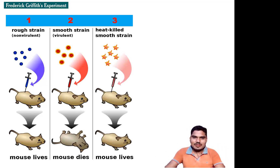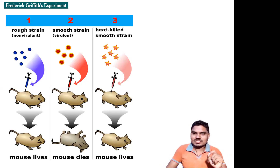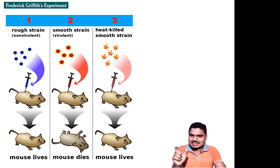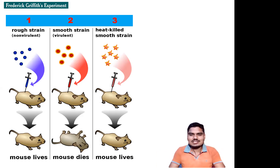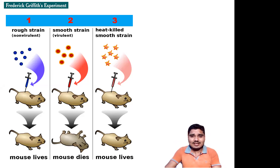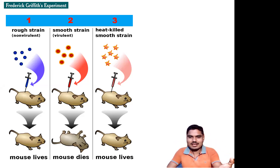In the second step, he injects the smooth strain bacteria — considered virulent — into the mice. Obviously smooth strain bacteria cause the disease because they have the smooth polysaccharide coat around their cell, so the mice died. In the third step, he heat-killed the smooth strain bacteria. While heating the smooth strain bacteria, he destroyed the polysaccharide coat present around their cell, but he did not destroy their DNA molecule. Due to the absence of polysaccharide coat, the smooth strain bacteria turns into rough strain bacteria. He then injects the heat-killed smooth strain bacteria into the mice, and the mice did not die.